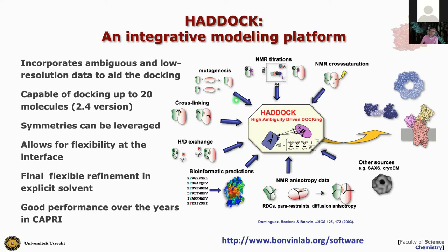Since the early days of HADDOCK, things have evolved a lot. Currently we can handle up to 20 different molecules, building large macromolecular assemblies. Symmetry is another source of information you can leverage — if modeling symmetrical assemblies like homomers, you can impose symmetry as an energy restraint incorporated in sampling and scoring. We allow flexibility at interfaces through a flexible refinement stage, and we do final refinement adding solvent. We have consistently put our software to the test by participating in CAPRI over the years with consistent, reasonable results.